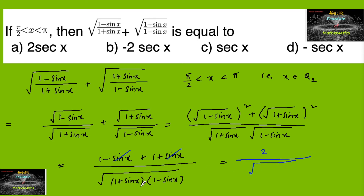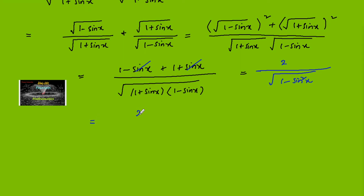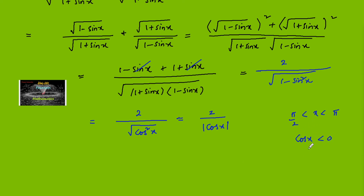The denominator is √((1 + sin x)(1 - sin x)) = √(1 - sin²x). Since 1 - sin²x = cos²x, we get 2 / √(cos²x) = 2 / |cos x|. Since x lies between π/2 and π, that is in the second quadrant, cos x is negative.